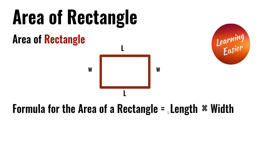Area of a rectangle. The formula to find the area of a rectangle is length times width. This is the length and this is the width.